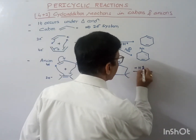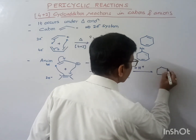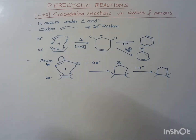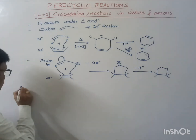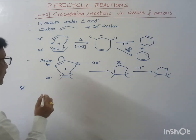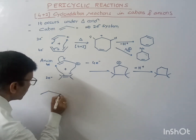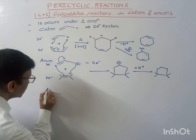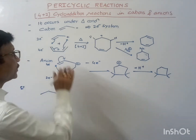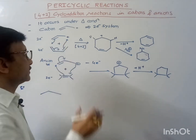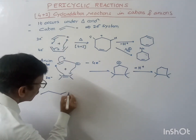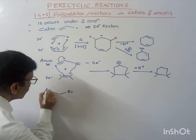In presence of H+, we will finally get this product. Now let us see some examples. Suppose if we have any cation, or the cation may be generated — usually the cation is generated as one of the intermediates — so it may be generated in some reactions. So suppose I take one of the examples over here.